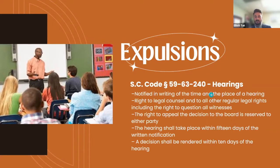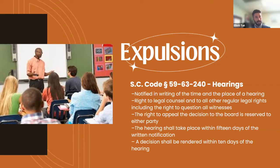The hearing has to take place within 15 days of the written notification. Here's the timeline: you can be suspended for no more than 10 days per incident. Within those 10 days, the school investigates and decides whether to recommend expulsion. If they do, they give you notice, the hearing happens within 15 days of notice, and the decision is rendered within 10 days of the hearing. Essentially, two to four weeks, your kid is out of school — missing about a month based on the statutory timeline alone.